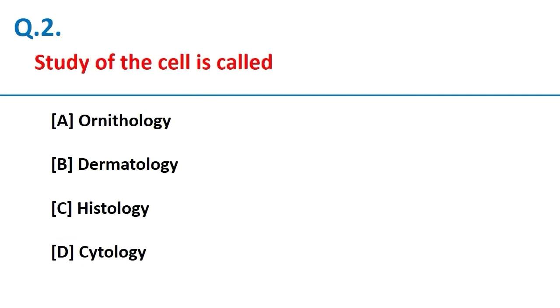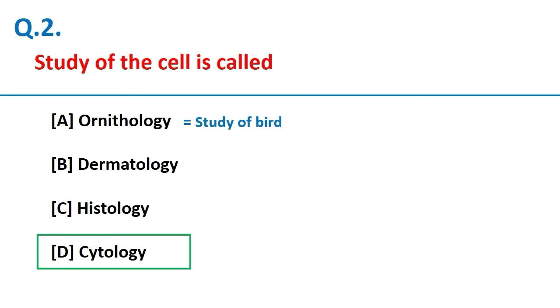The study of the cell is called cytology. The study of birds is called ornithology, the study of skin is called dermatology, and the study of tissues is called histology.